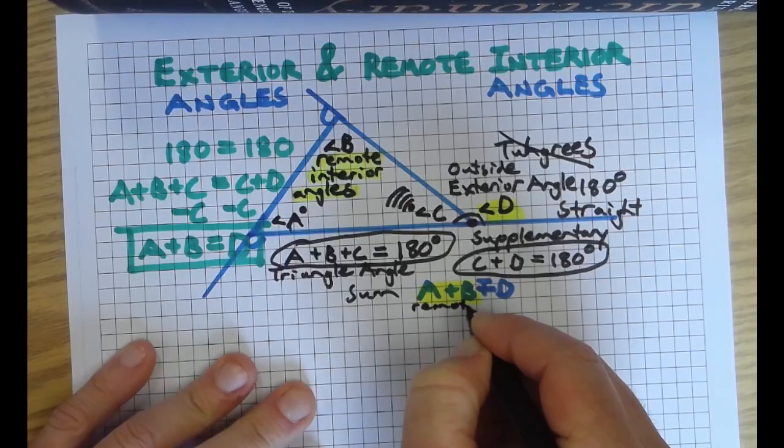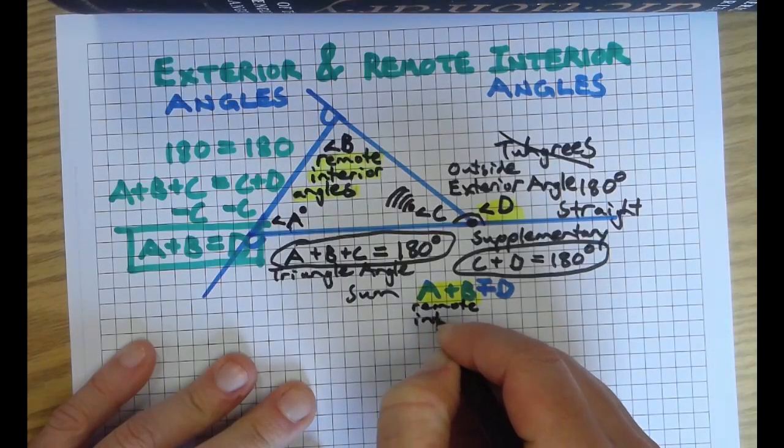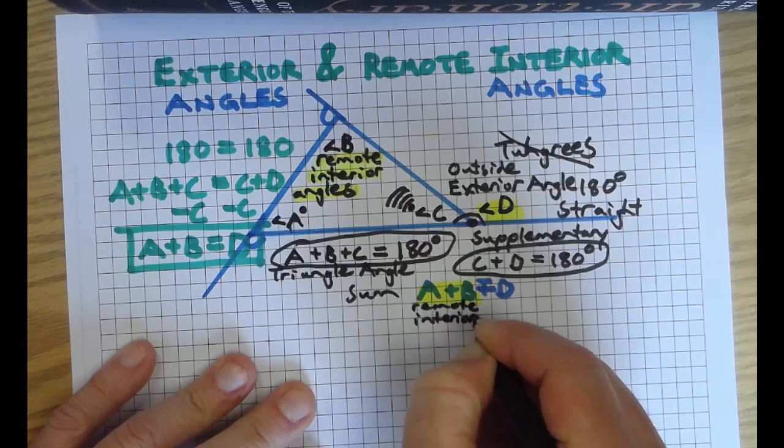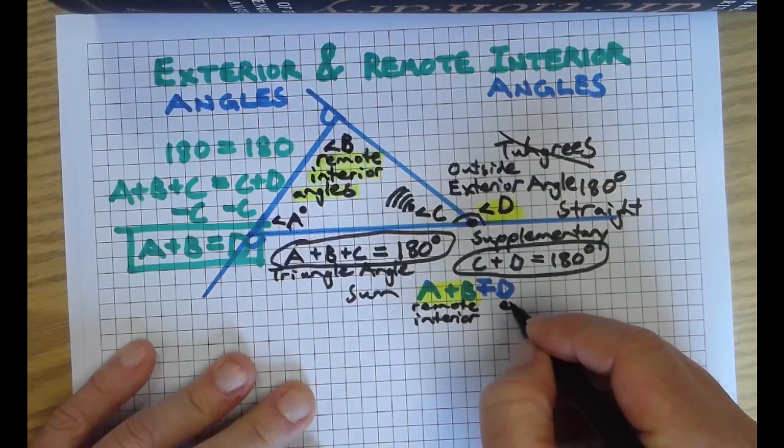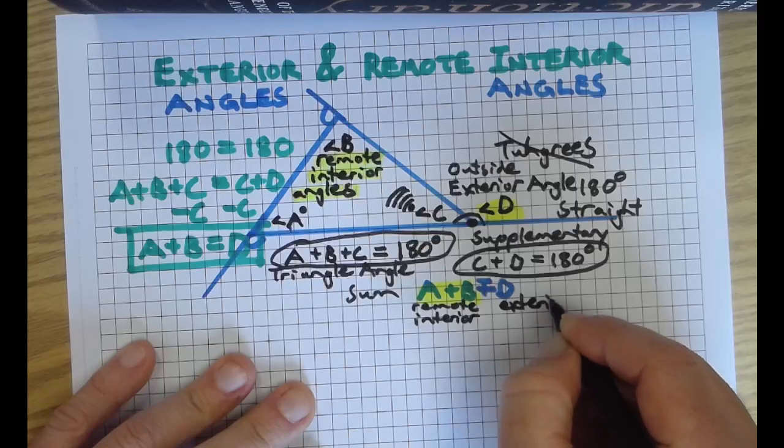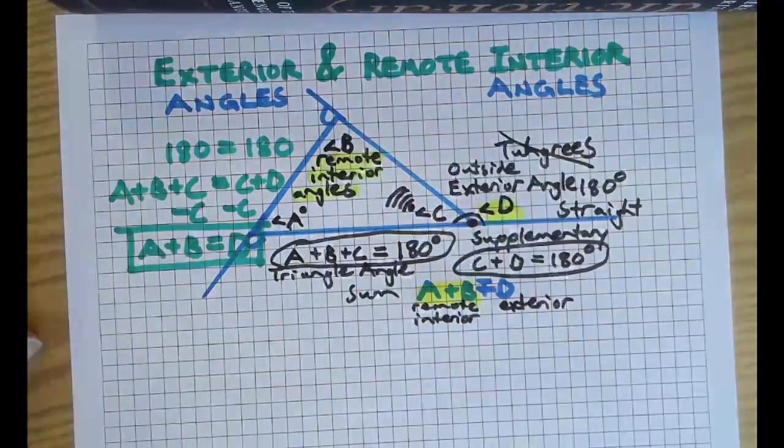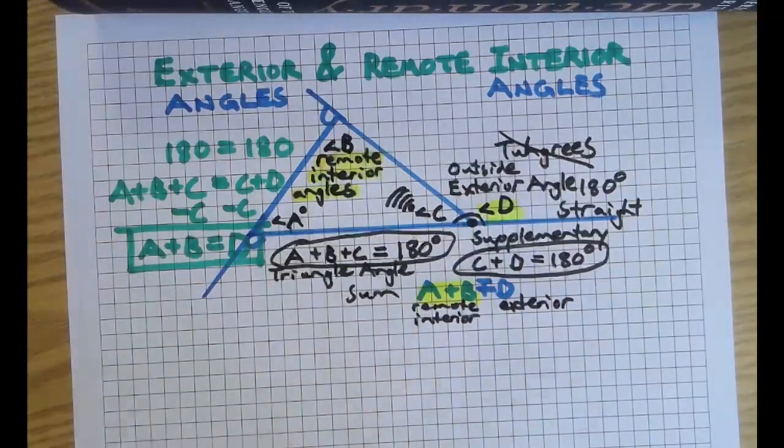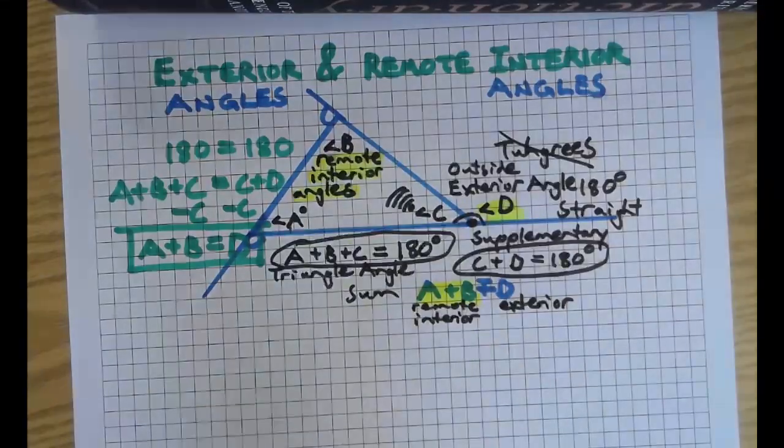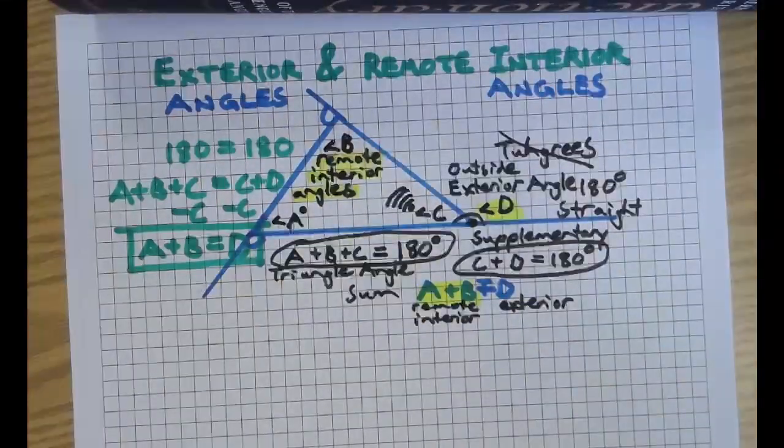Remote interior A and B, they are remote to D, which is an exterior angle. There we go. Excuse me, I haven't even had lunch yet, but I will soon. Don't worry.